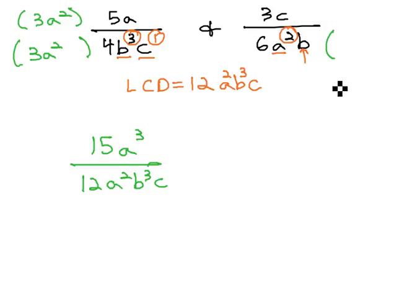Similarly, the other fraction. To move 6 to 12, we multiply by 2. We already have the a squared. b to b cubed, we need 2 more b's, or b squared. And finally, we also need the c factor.